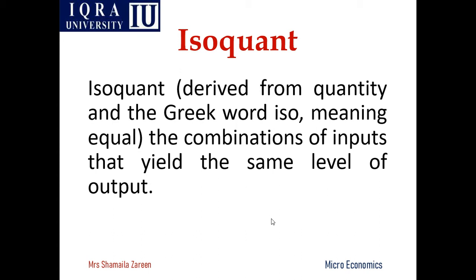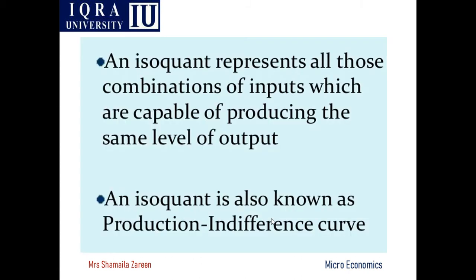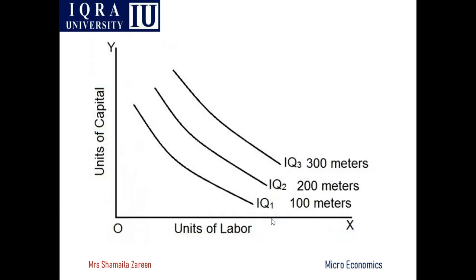I will revise the previous lecture. We started the concept of isoquant analysis and I described the types of production curves, including the linear and Leontief production functions. The idea behind isoquant is that it shows all those combinations of inputs which are capable of producing the same level of output. That is why it is called production indifference curves — these are like indifference curves but called isoquants because the quantity can be measured or quantified.